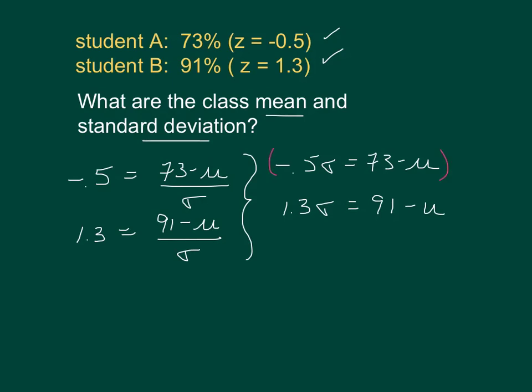When I do that, the mu's will cancel out. Then I'll have negative 1 times 73 plus 91, which is 18. And I'll have a positive 0.5 sigma and a 1.3 sigma makes a 1.8 sigma. Therefore, our standard deviation must be 10.